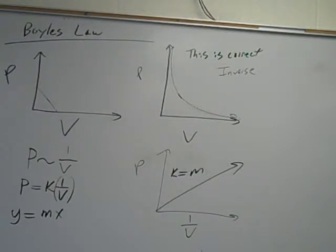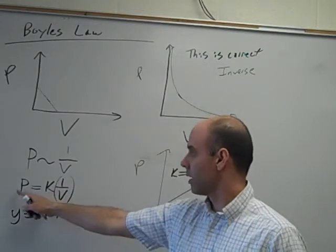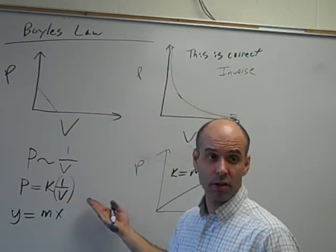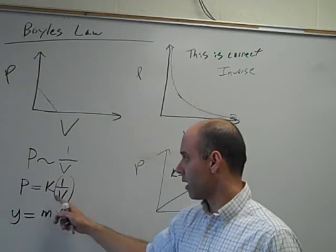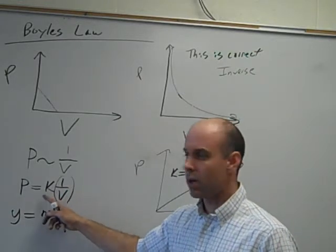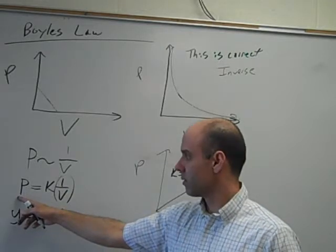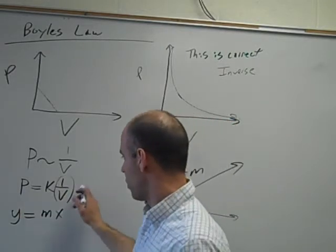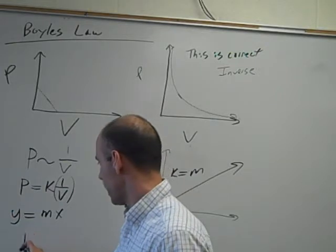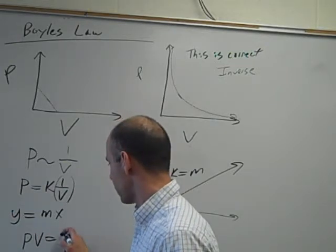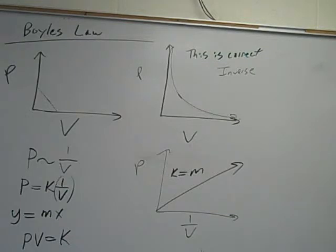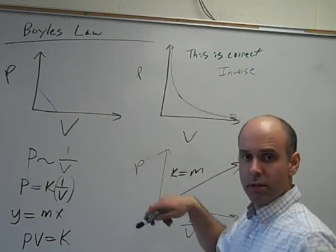And what is this equation in the form of? The equation of a line. The Y variable is pressure. The X variable is 1 over V. So what does that say about K and M? The slope. So if I want to find the value of K, it is my slope. And that's why I had to do graph number 2 because you were able to find the constant in Boyle's Law.